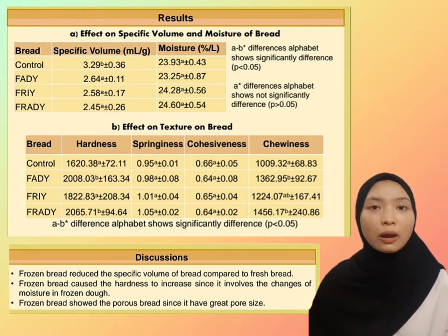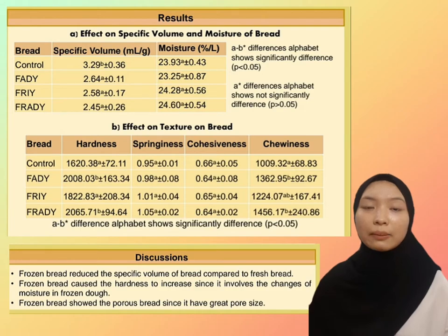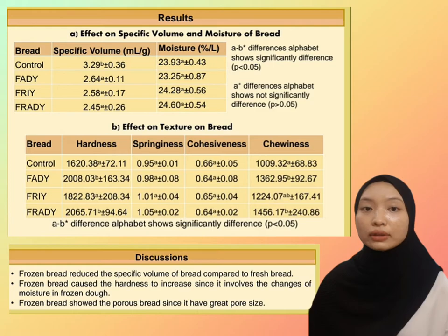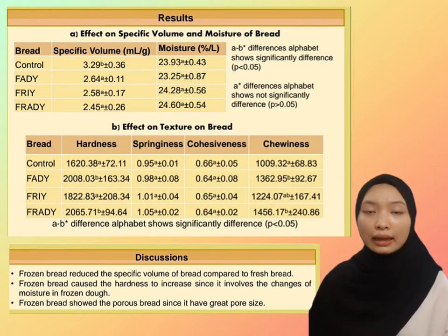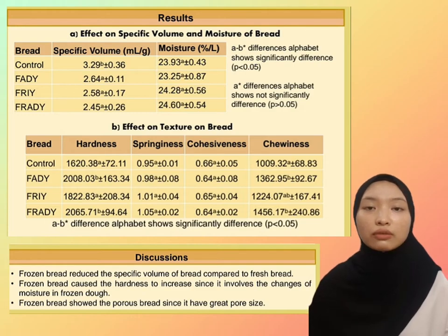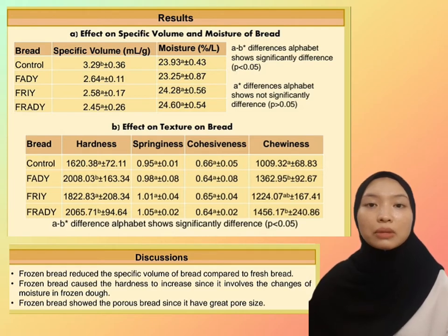The problem with proofing time may be due to changes in starch and gluten development structure in frozen dough. The moisture content of bread was found to have no significant difference among all types of bread. However, frozen bread showed higher moisture content, caused by the formation of ice crystals during freezing and frozen storage that damaged the physical and gluten network in the dough.